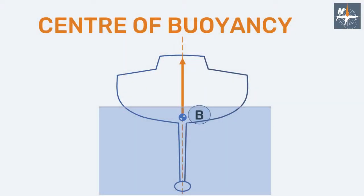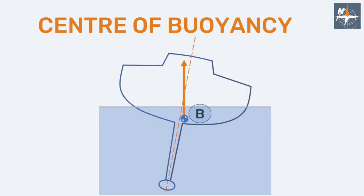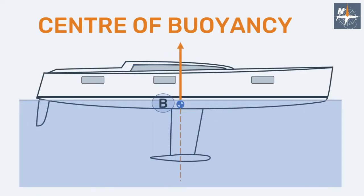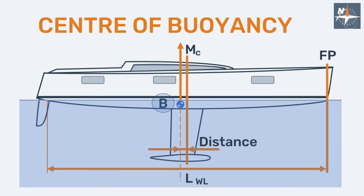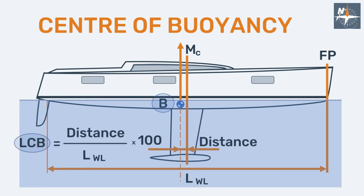We call center of buoyancy the center of gravity of the displaced volume of water through which the total buoyancy may be assumed to act. LCB denotes the longitudinal position of the center of buoyancy, measured from midships or the forward perpendicular, and is generally expressed as the ratio of the waterline length.